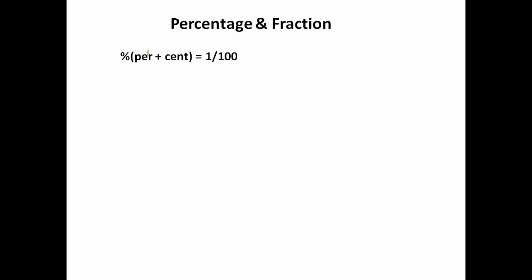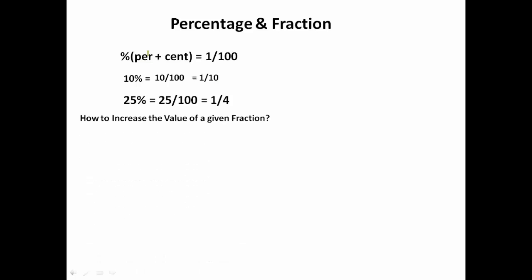Let's see some basic concepts about fractions. As you all know, percentage comes from 'per' plus 'cent,' and 'cent' means hundred — so percentage means 1 upon 100. If we say we have 10%, we can change it into a fraction: 10% can be written as 10/100, which simplifies to 1/10. Similarly, 25% can be written as 1/4.